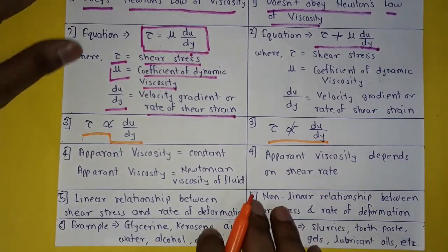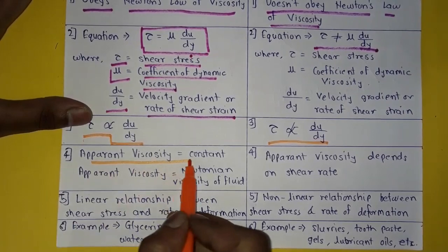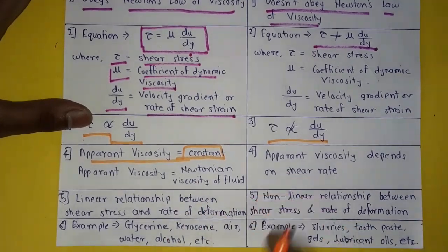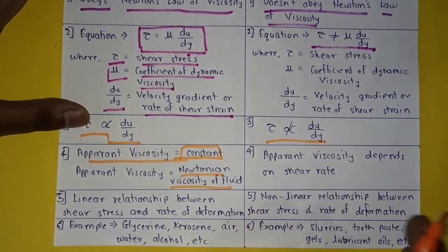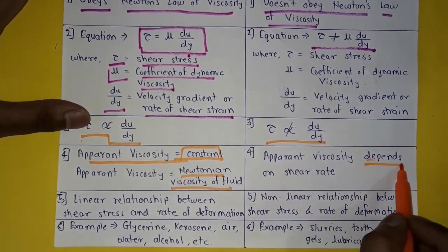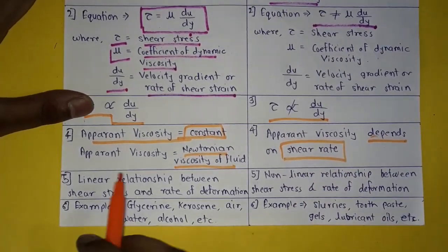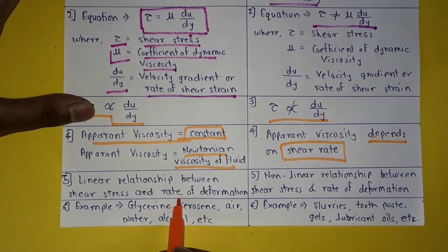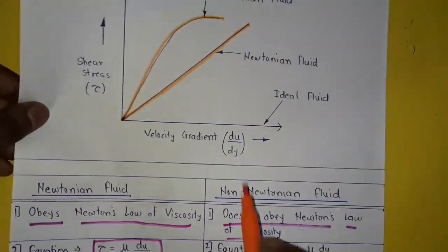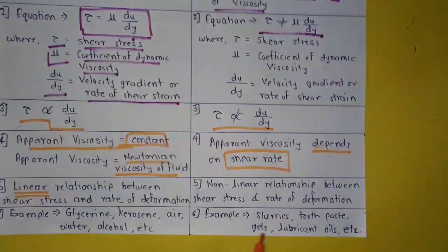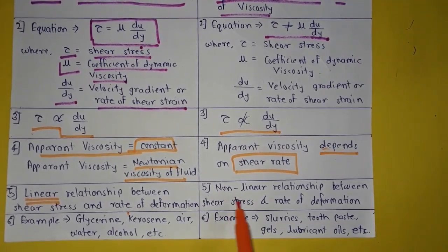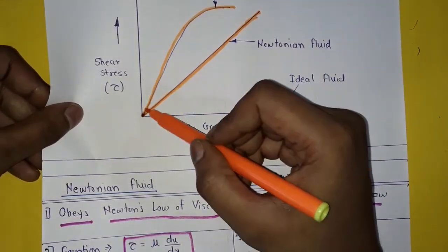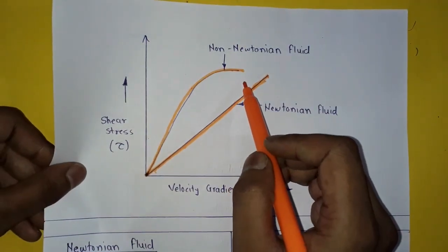In Newtonian fluid, apparent viscosity is constant, and also apparent viscosity is equal to the Newtonian viscosity of the fluid. In non-Newtonian fluid, the apparent viscosity depends on the shear rate. In Newtonian fluid, there is a linear relationship between shear stress and rate of deformation, so it is a straight line on the graph. In non-Newtonian fluid, there is a non-linear relationship between shear stress and rate of deformation, so the line will be a curve on the graph.